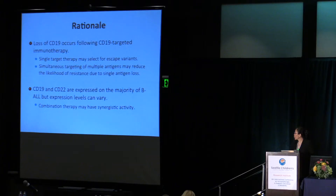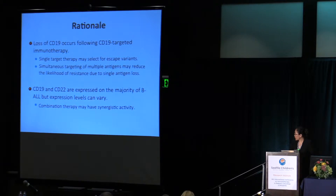CD19 and CD22 are expressed on the majority of B-cell leukemias, but their expression levels can vary widely. This brings challenges for treating with just a single targeting approach.